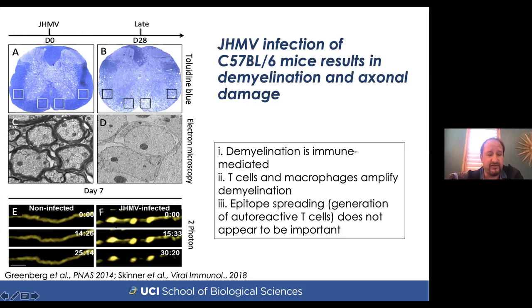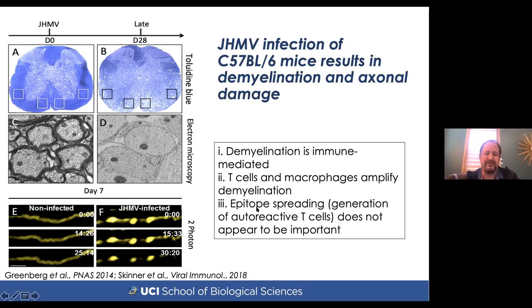Two-photon electron microscopy revealed axonal damage in these animals that often precedes demyelination. The demyelination in animals persistently infected with JHMV is immune-mediated — both T cells and macrophages are important in amplifying it. We don't see epitope spreading, meaning generation of myelin-reactive T cells. We think the demyelination is due to a misguided attack against viral antigen that brings in activated immune cells, which then contribute to the neuropathology.